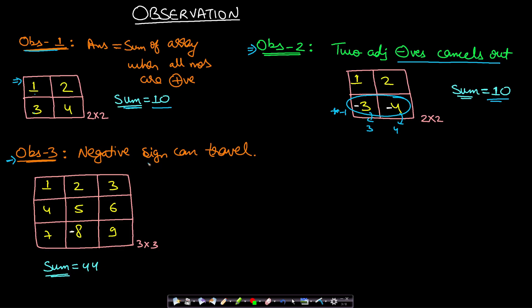Observation 3: the negative sign can travel. In a 3×3 matrix, -8 is negative while all others are positive. If you choose -8 and 9 and multiply by minus 1, the negative is removed from -8 and transferred to 9. Since the negative sign can travel, you can move it to any number. To maximize the sum, move the negative to the element with the lowest absolute value — for example, to 1.